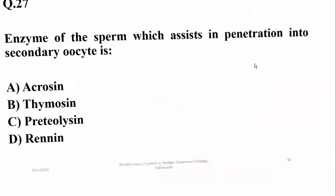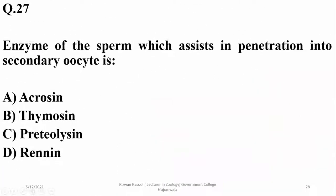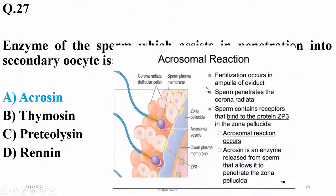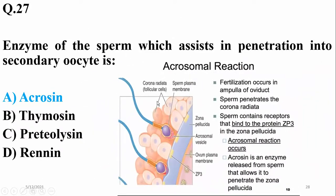Question number twenty-seven: the enzyme of the sperm which assists in penetration into the secondary oocyte is the acrosome. It is found in the head region of the sperm.